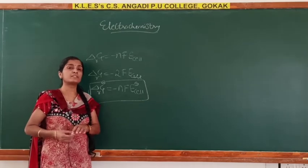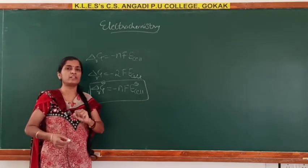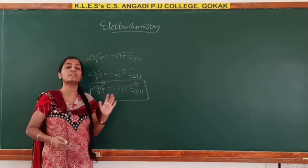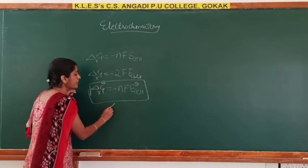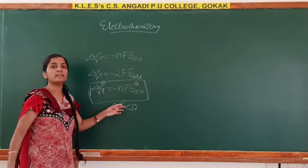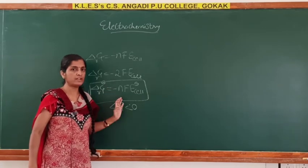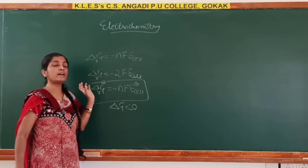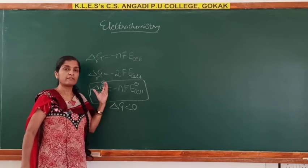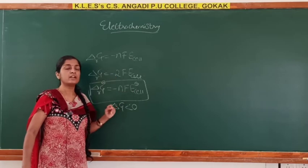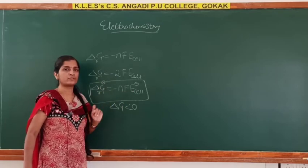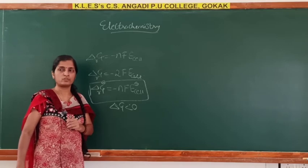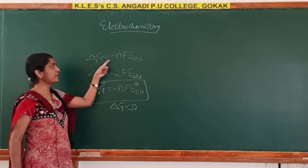The negative sign is because a reaction is spontaneous only when there is a decrease in its Gibbs free energy. For a spontaneous process, delta G should be less than zero. This electrical work done causes a decrease in the free energy of the system, given by delta G_r equals minus nF times E_cell.